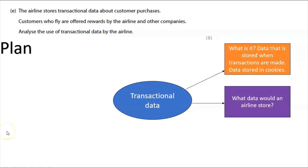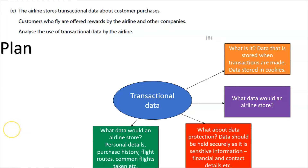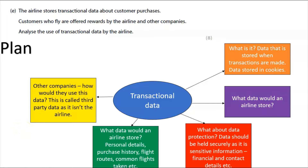First, think about exactly what transactional data is: data stored when transactions are made, stored in cookies. What data would an airline store? Then think about data protection — the data should be held securely as it's sensitive, including financial and contact details. Remember you must link everything back to the airline specifically to get the maximum mark.